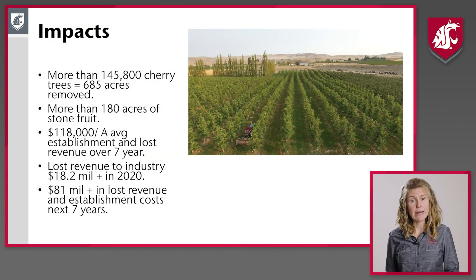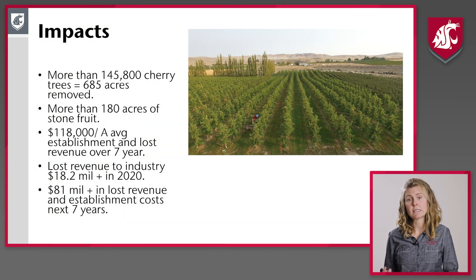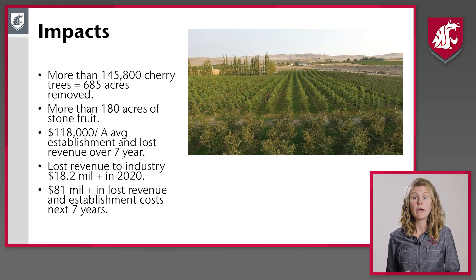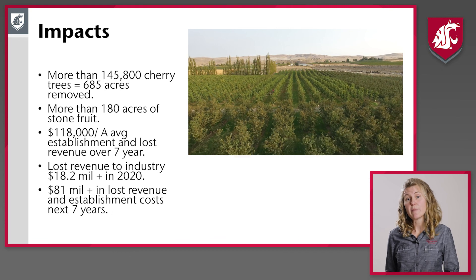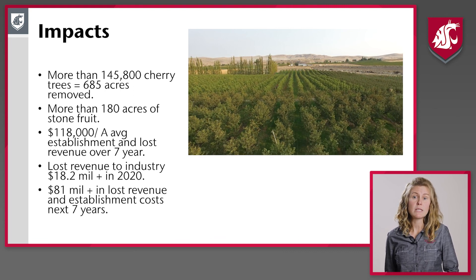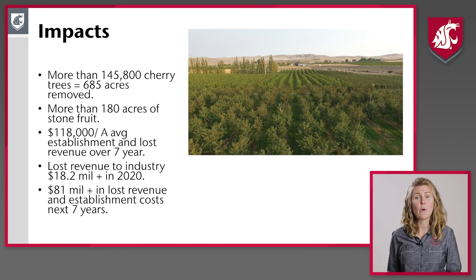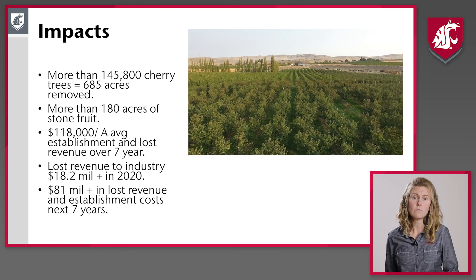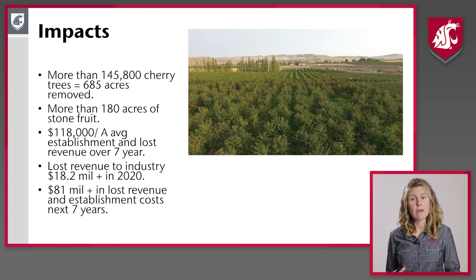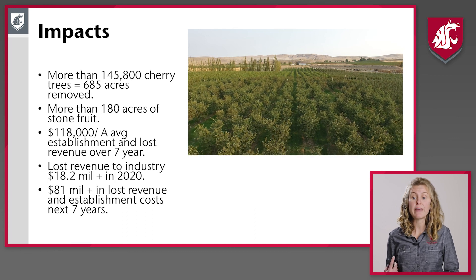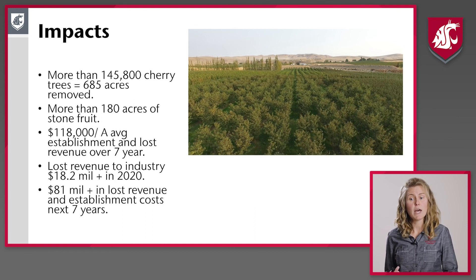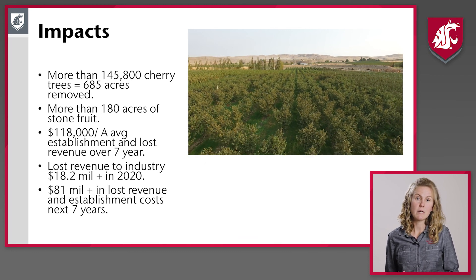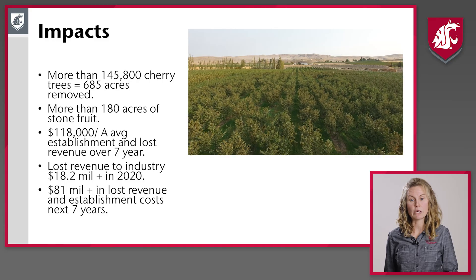We wanted to get a better idea of the impacts of both X and Little Cherry disease throughout the state. So we've been surveying growers, consultants, and orchard managers. We have about 63 respondents so far, representing 13,500 acres, or about 23% of our cherry acreage in Washington and Oregon. So far they've told us about 145,000 cherry trees — equaling 685 acres — that have been removed due to X disease and Little Cherry virus, as well as 140 acres of stone fruit.